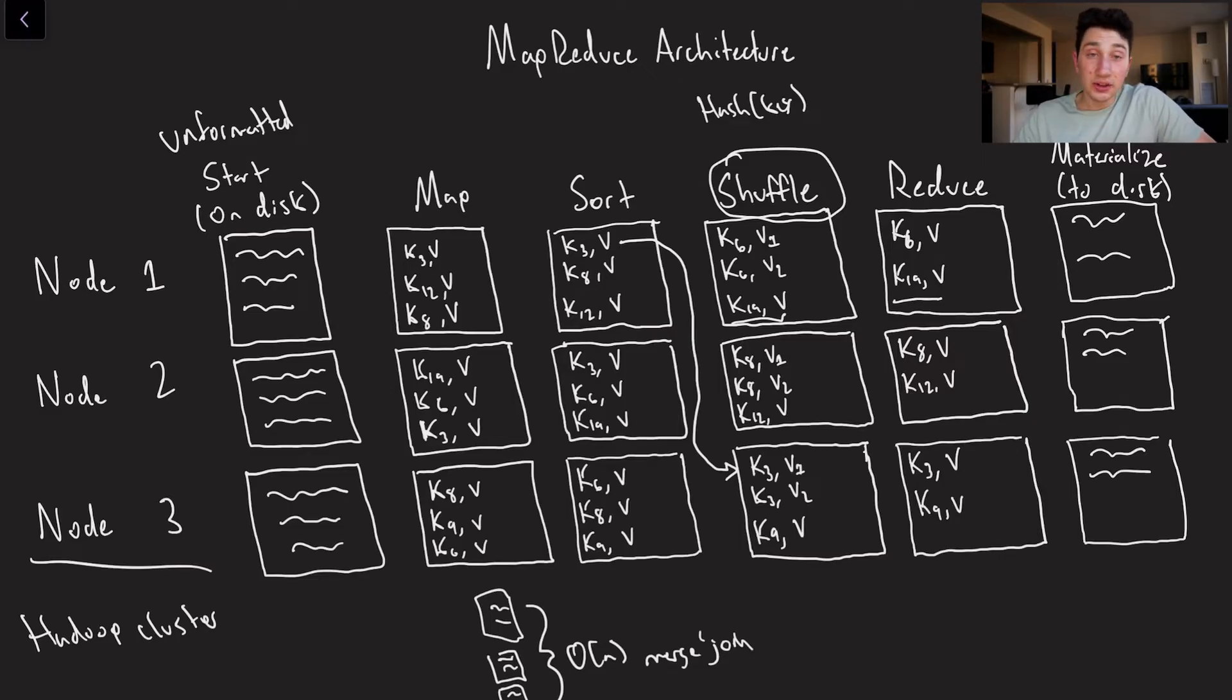And I'll explain why that is on the next slide. So again, shuffling is literally just partitioning, it's taking a hash of every single key and sending it to the proper node so that it can be reduced. Now remember, that reducing is basically saying, okay, we have multiple values corresponding to the same key. Let's compress them down to just one value.